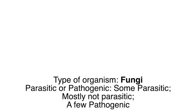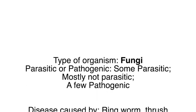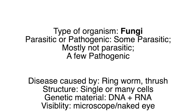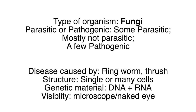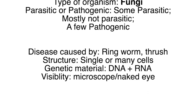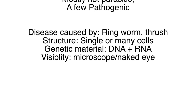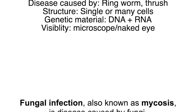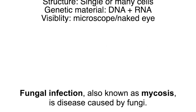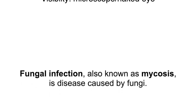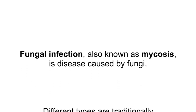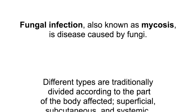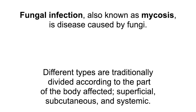Type of organism: fungi — some parasitic, mostly not parasitic, a few pathogenic. Diseases caused include ringworm and thrush. Fungi are single or many-celled with DNA and RNA, visible to the microscope and naked eye. Fungal infection, also known as mycosis, is disease caused by fungi.